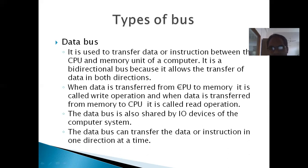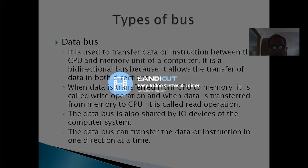When data is transferred from CPU to memory, it is called a write operation. We are writing to the memory. When data is transferred from memory to CPU, it is called a read operation. The data bus is also shared by I/O devices of the computer system. The data bus can transfer data or instructions in one direction at a time.